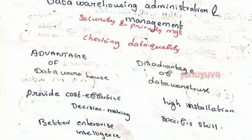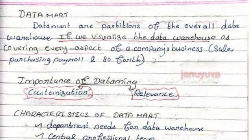Advantages and disadvantages of data warehousing. Advantages: provides cost-effective decision making and better enterprise intelligence. Disadvantages: high installation costs and requires specific skills.